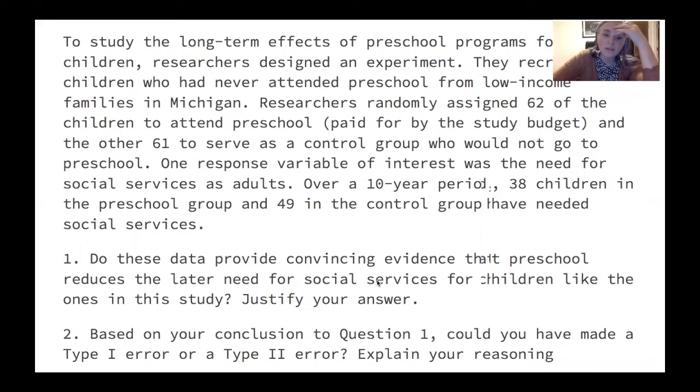I did add one, do they provide convincing evidence? That's that 5% condition. And then the second one is based on your conclusion to question one, could you have made a type one or a type two error explain your reasoning? Okay. So pause.